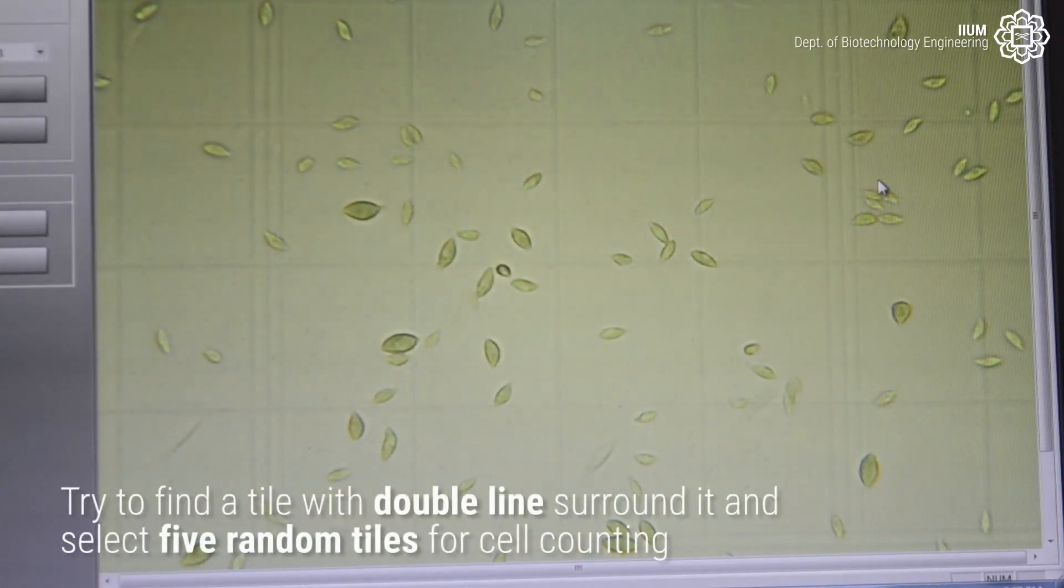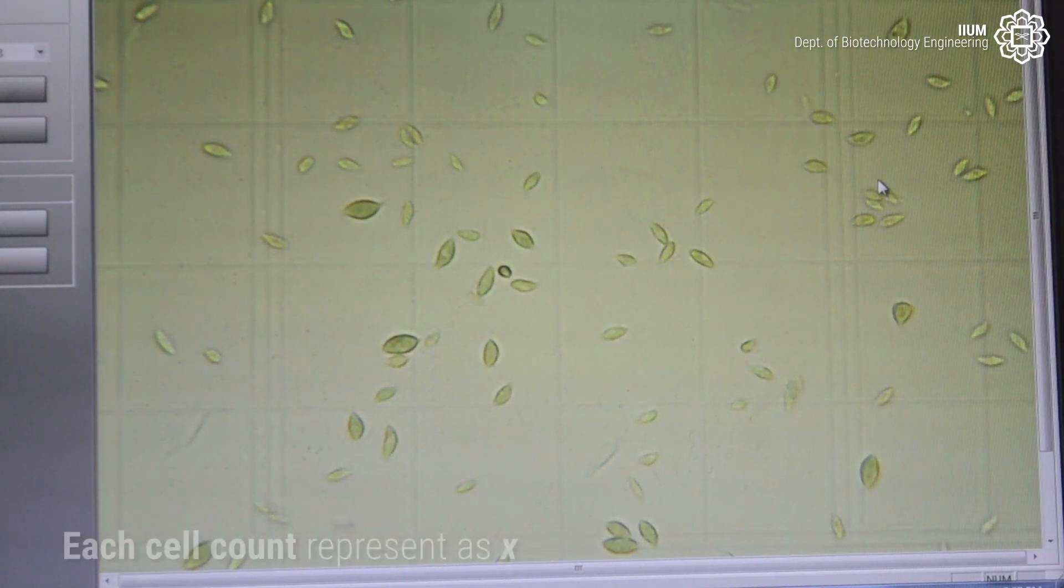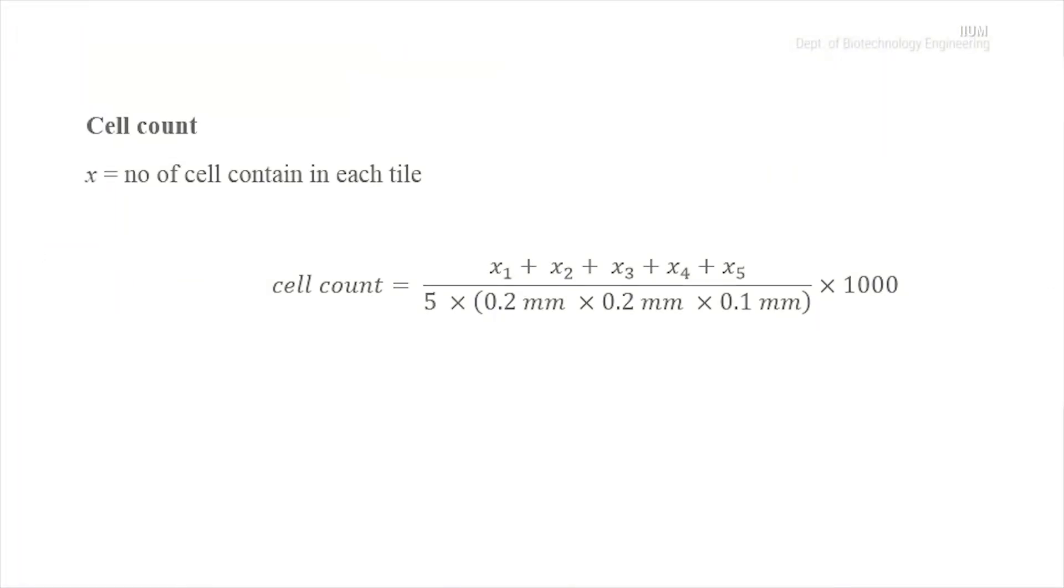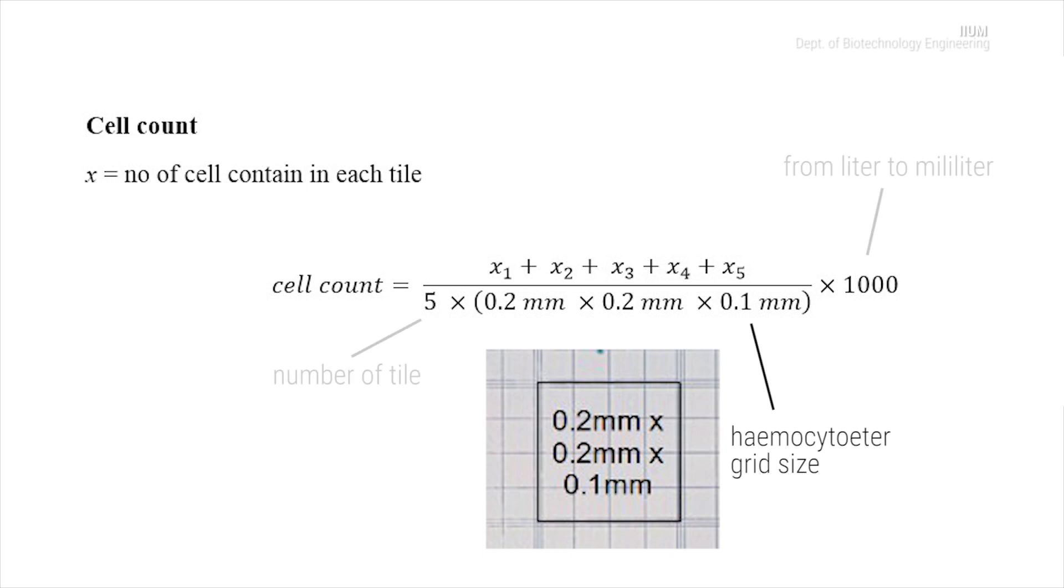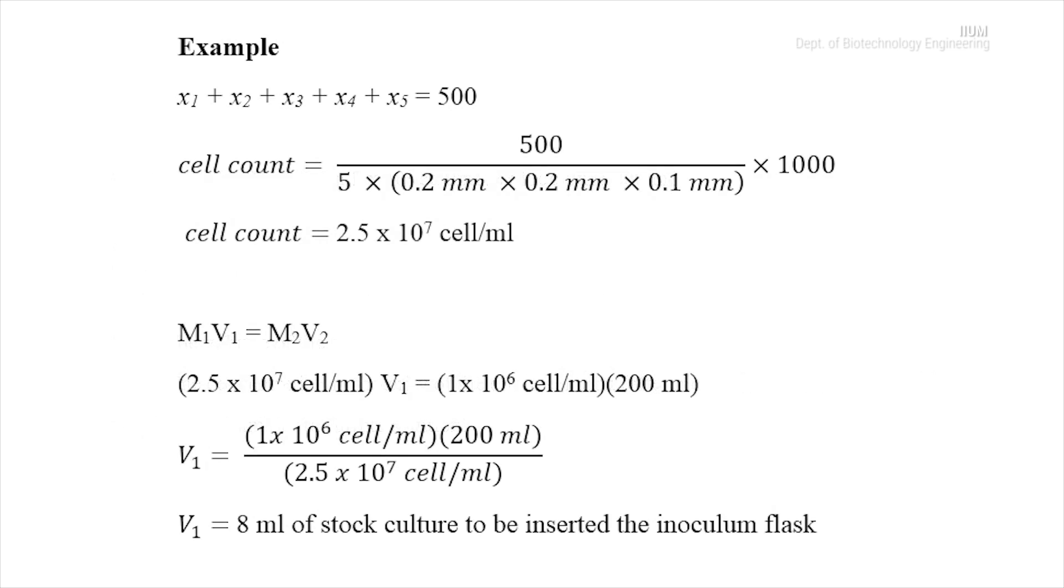Try to find a tile with double lines around it and select five random tiles for cell counting. Each cell count represents as X. Calculate the total number of X, then insert sum of X into the cell count formula to get the M1 value. Then we can calculate the value of V1, which is the volume of stock culture to be inserted into the inoculum flask.